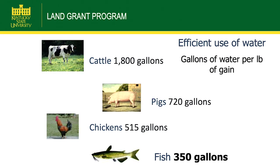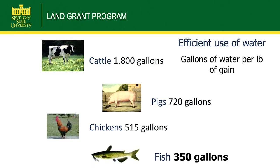Here's one that's counterintuitive. One of the great predicted shortages is potable fresh water — for irrigation, raising animals, or general use. Limited access to water is anticipated for many parts of the world and sections of the United States. To put a pound of gain on a cow, calculations show about 1,800 gallons of fresh water. Pigs about 720. Chickens 515. And fish — very counterintuitive since we raise them in water — are much more efficient utilizers of fresh water in terms of producing a pound of gain, several times more efficient than cattle certainly.